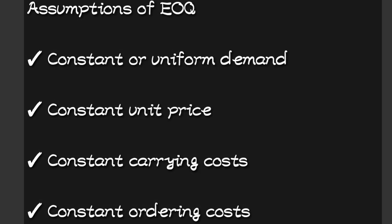The first assumption of the economic order quantity is that there is constant or uniform demand, which is not always the case because demand varies from day to day. The demand today may not be the demand tomorrow, and the demand this month may not be the demand next month, so constant demand is rare.